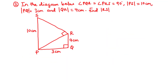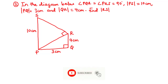Now let's solve a more complex example. Example two: in the diagram below, angle PQR = angle PRS = 90 degrees. The length PS is 10 centimeters, PQ is 3 centimeters, and QR is 4 centimeters. Find the length RS.